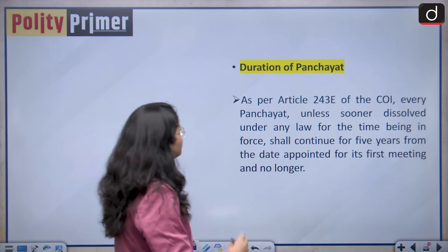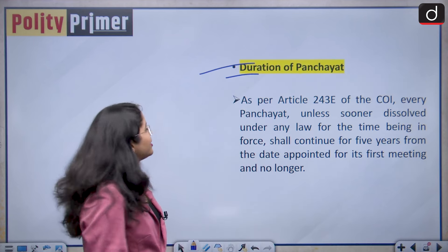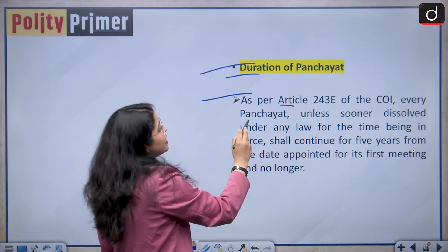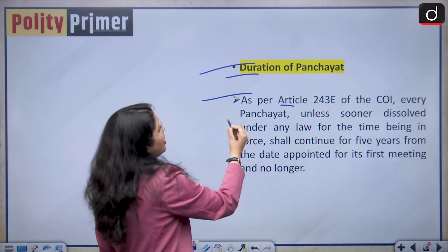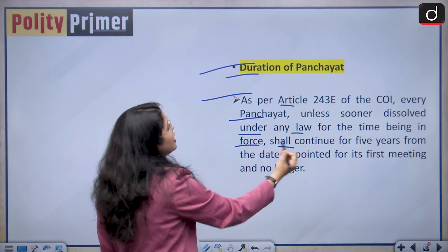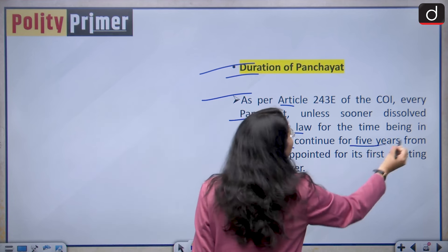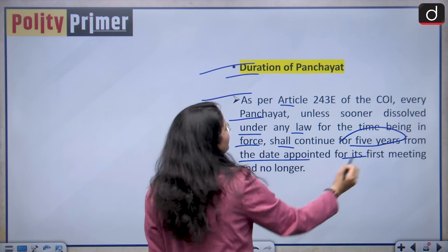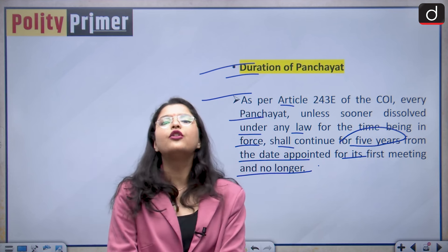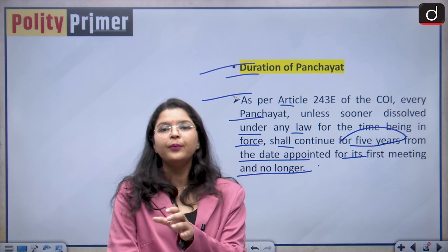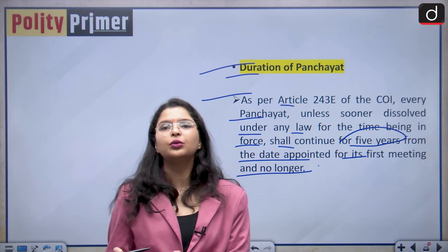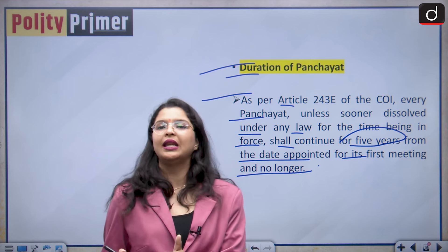What shall be the duration of the Panchayat? As per Article 243-E of the constitution of India, every Panchayat, unless sooner dissolved under any law for the time being in force, shall continue for 5 years from the date appointed for its first meeting. Basically the duration is 5 years. But if it is dissolved earlier, the new Panchayat which is constituted will work for the remaining term.